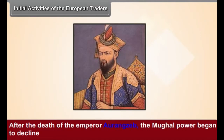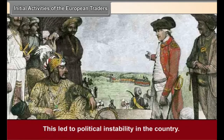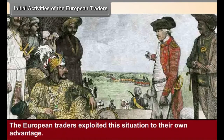After the death of Emperor Aurangzeb, the Mughal power began to decline. The various governors or the Subhedars of the Mughal Empire started acting independently. This led to political instability in the country. The European traders exploited this situation to their own advantage.